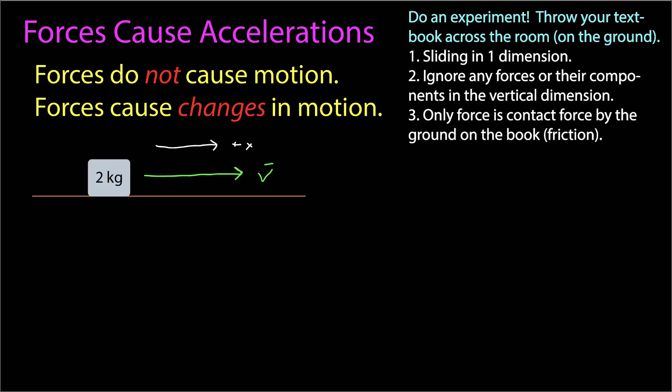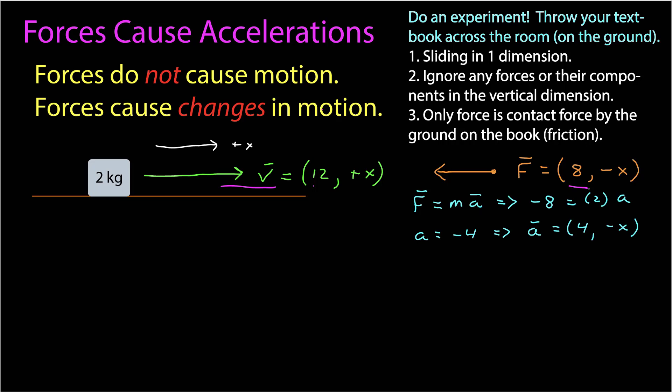Let's take a look at that. We're just going to be working in one dimension — sliding in 1D — and so we're going to ignore any forces or component of forces in the vertical dimension, just looking horizontally. After it leaves your hand, the only force is the contact force by the ground on the book, which is friction. If the book is moving to the right, then there is a friction force to the left. Using Newton's Second Law, the net force is equal to the mass times the acceleration in vector form.